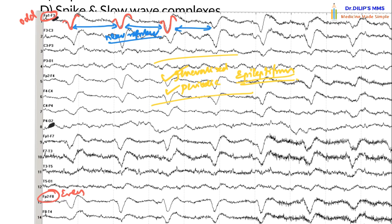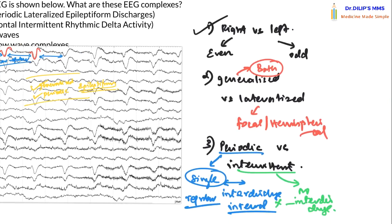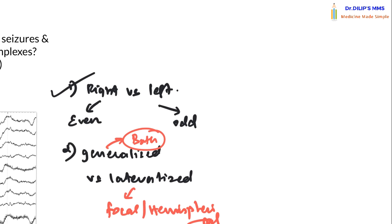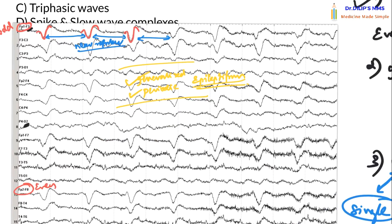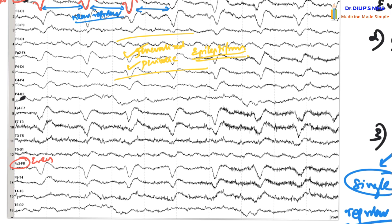One important type of generalized periodic epileptiform discharge is triphasic waves. Triphasic waves show a characteristic initial negative deflection (upward in EEG), followed by a positive deflection (downward), and then another negative deflection (upward again). There are three characteristic deflections — negative, positive, then negative — which is why we call them triphasic waves.